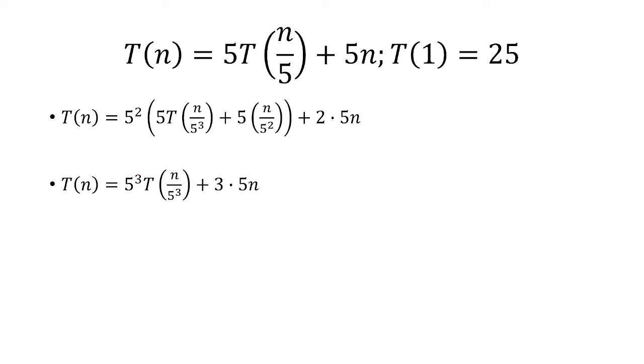Notice in our third iteration we have the exponents here, they're all 3, so if we do this k times we just replace 3 with k. Now we want to eliminate T of n over 5 to the k, so what we want is for n to equal 5 to the k.